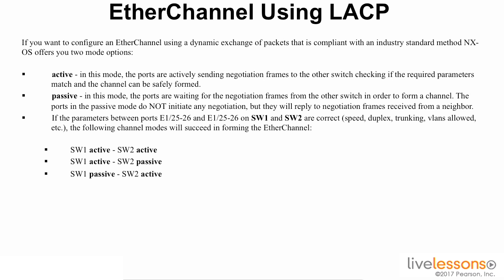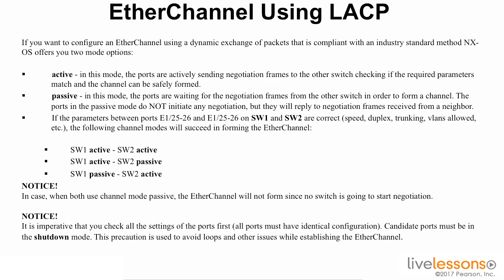If the parameters between ports on two switches are correct — the speed, duplex, trunking, VLANs allowed, etc. — are the same, the following channel modes will succeed in forming an EtherChannel. If one switch has active and the other switch has active, they will form a port channel. If one switch is active and the other is passive, it will form a port channel. If both switches are passive, the EtherChannel will not form because both sides will be waiting for the other switch to start a negotiation.